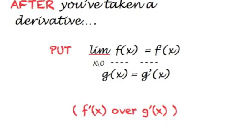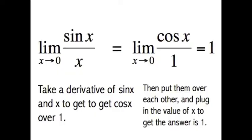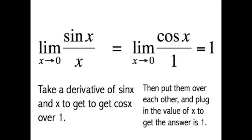After you've taken a derivative, put F prime of X over G prime of X. And if you still don't get it, here's an example to help you out. The limit as X approaches 0 of sin of X over X.